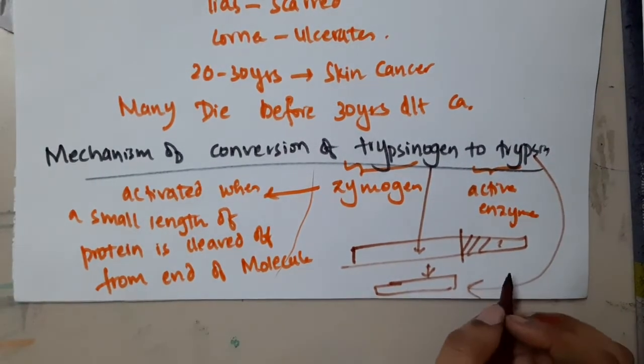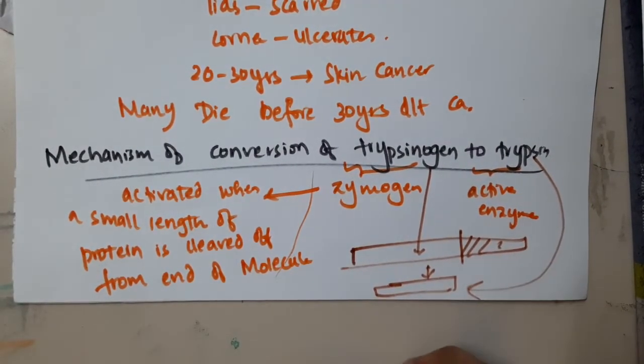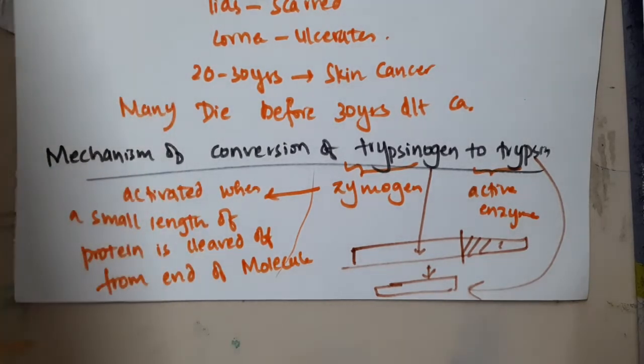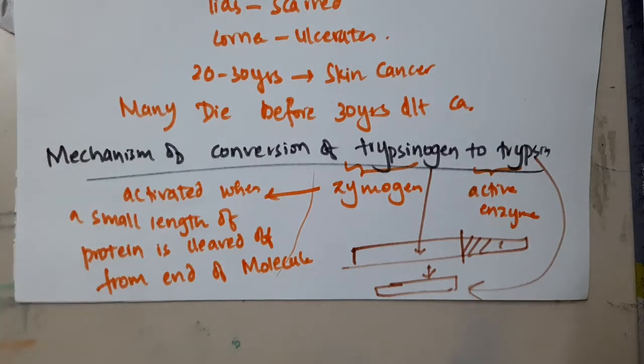That means a part of the protein from the end will be cleaved off and thus it forms an active molecule. This is about the mechanism of formation of trypsin from trypsinogen. Thank you.